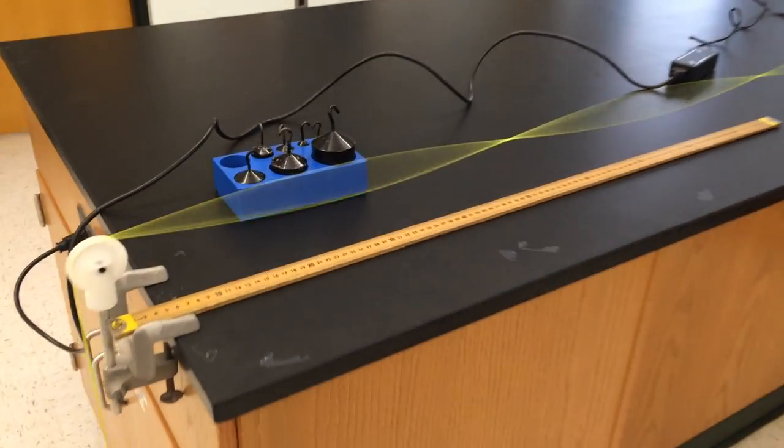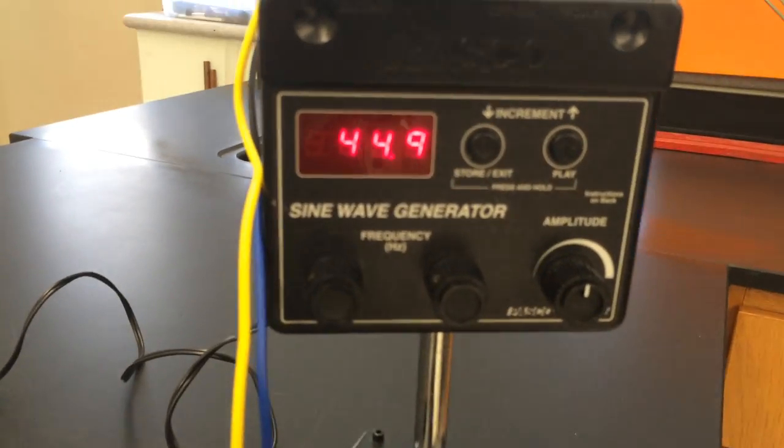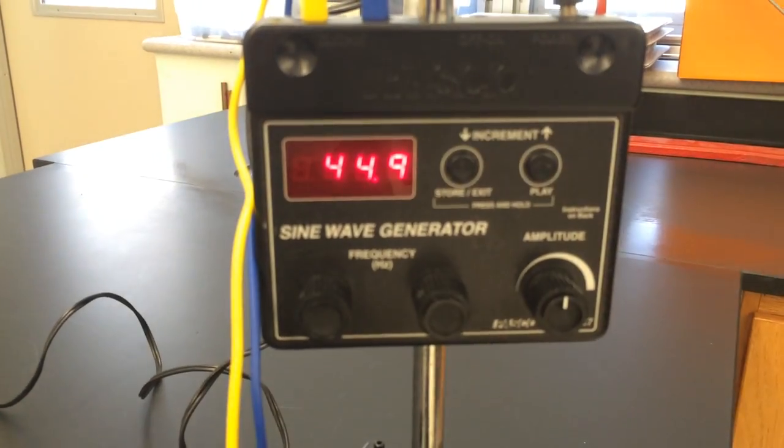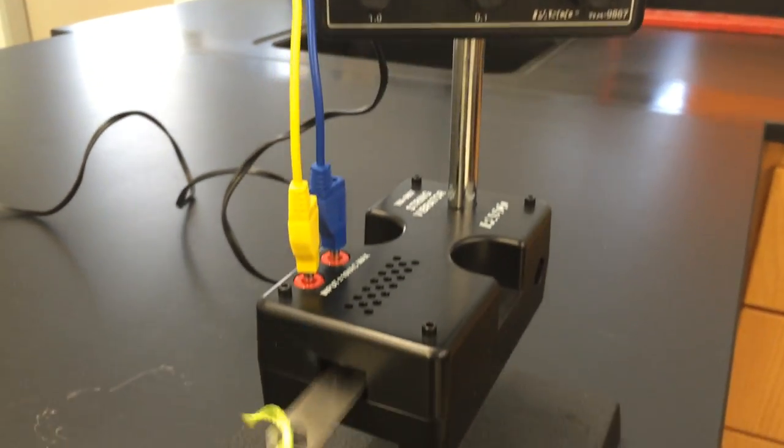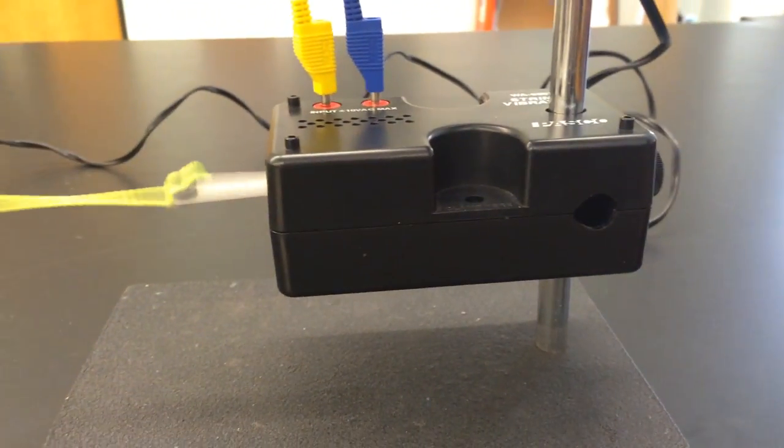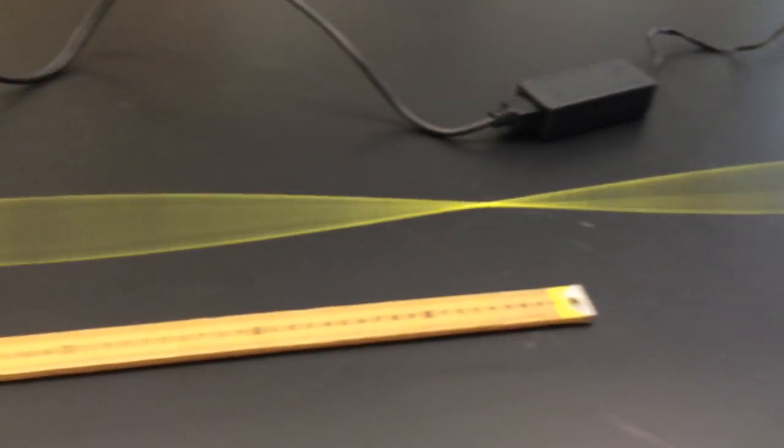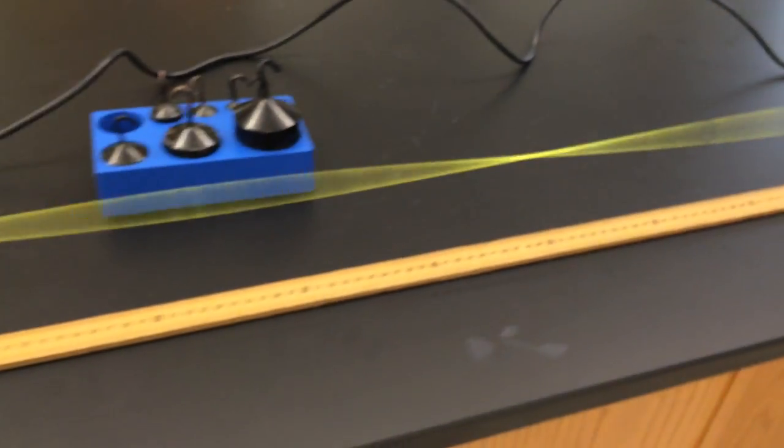A string vibrator or string oscillator can be used to create a standing wave in a string. In this case, the frequency of the oscillation is controlled by the sine wave generator. A standing wave will result if the frequency is matched to the length of the string.